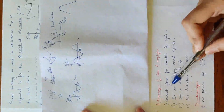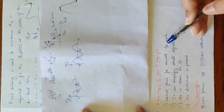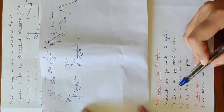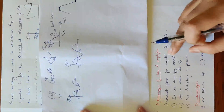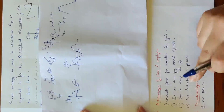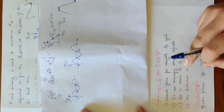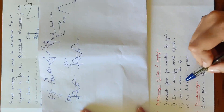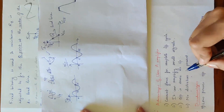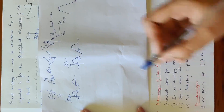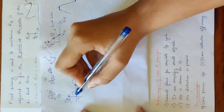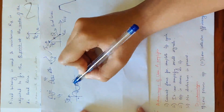Current flows for 360 degrees — the full cycle. It can amplify small signals. In the Class A power amplifier, the output is the same as the input. The wave shape of the output is the same as that of the input waveform.